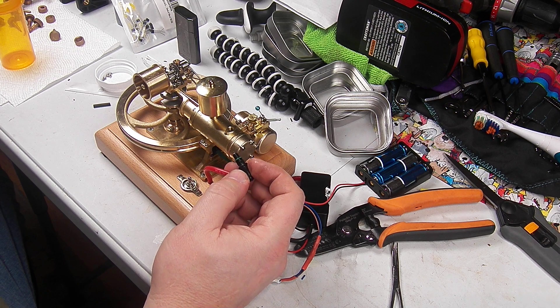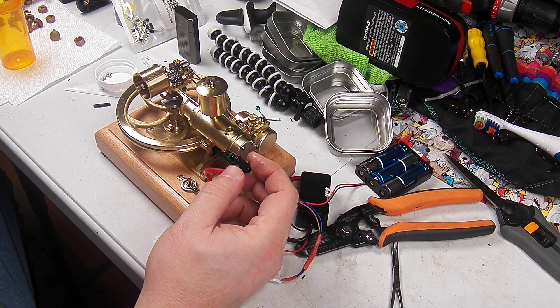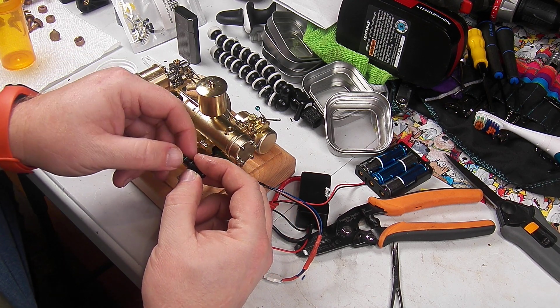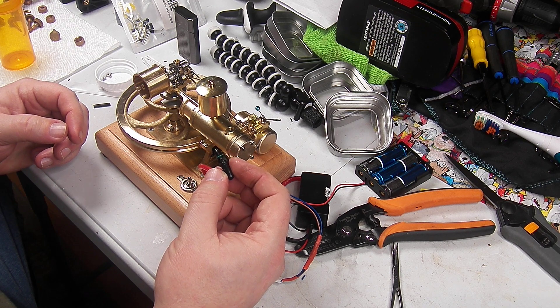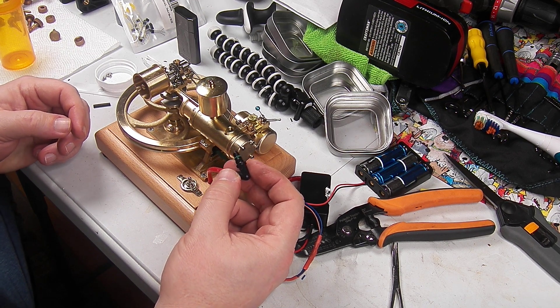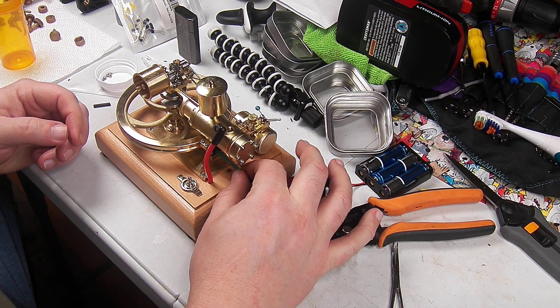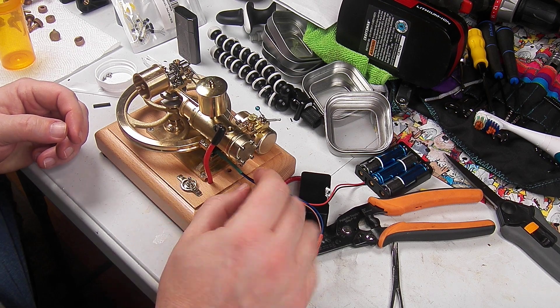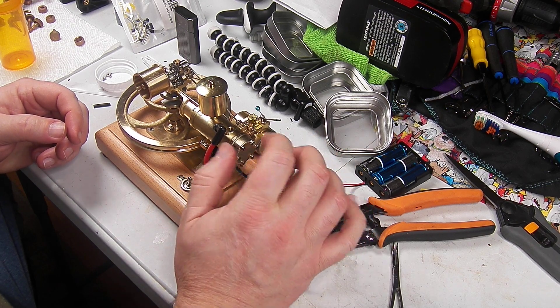They make hall sensors that just detect any change in magnetic field and ones that only react to a south pole or a north pole. So if you get the ones that only react to a certain pole, they've got to be the right side facing the magnet to react.